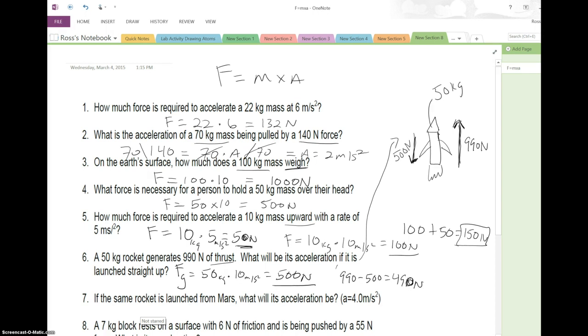So now we can actually find acceleration. 490 newtons equals 50 kg times acceleration. Divide both sides by 50, and acceleration is equal to 9.8 meters per second squared.